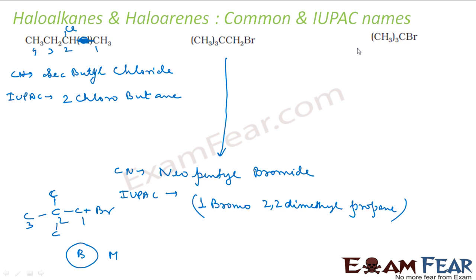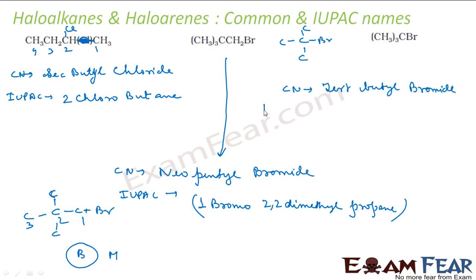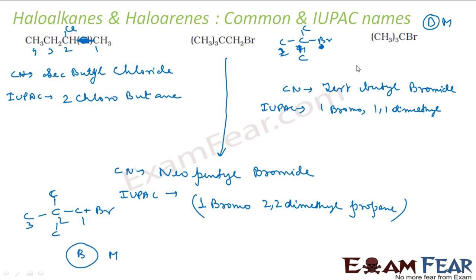Let's take this compound: (CH3)3CBr. The structure has bromine on a central carbon with three methyl groups. The common name is tert-butyl bromide. For the IUPAC name, let's number it 1, 2, 3 — bromo and methyl, B comes before M, so write B first. Bromine is at position 1, and I have 1,1-dimethyl — so it is 2-bromo-2-methylpropane.